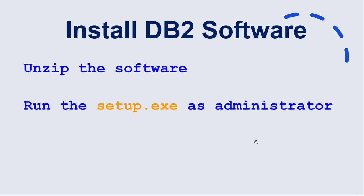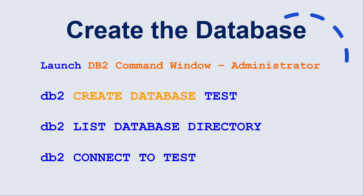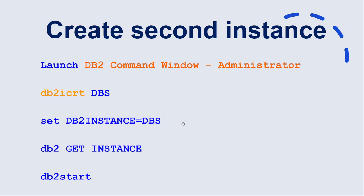To summarize the installation: download the software, unzip it, and run setup.exe as admin — it's essentially next, next, next. Once installed, launch the DB2 Command Window Administrator. Use db2 CREATE DATABASE <name> to create a database, verify with db2 LIST DATABASE DIRECTORY, then CONNECT TO <database name>. To create a second instance, launch another DB2 Command Window Administrator.